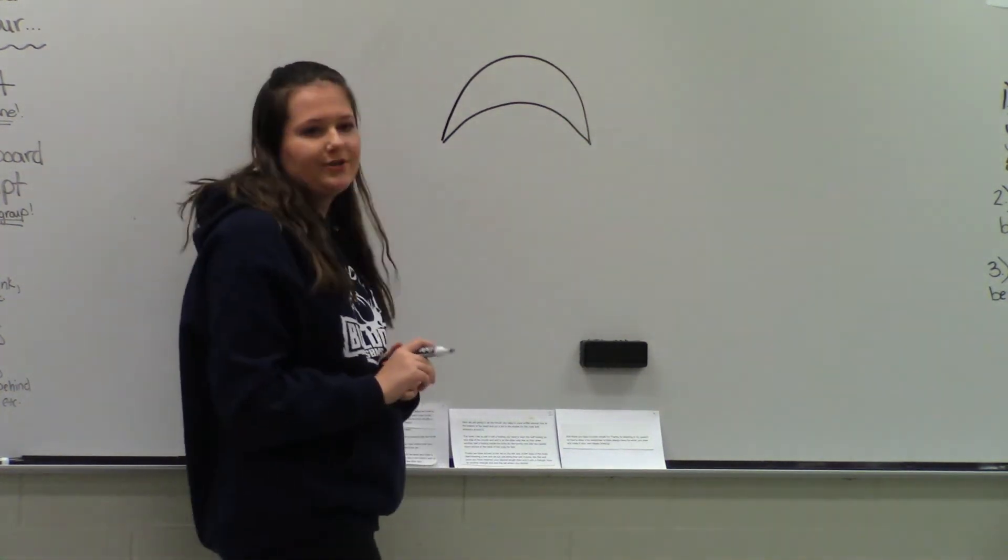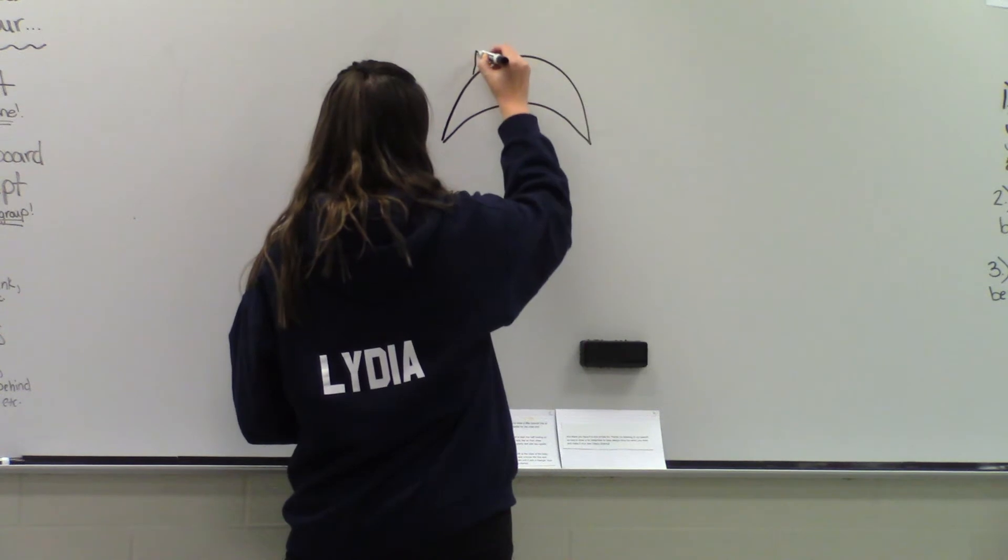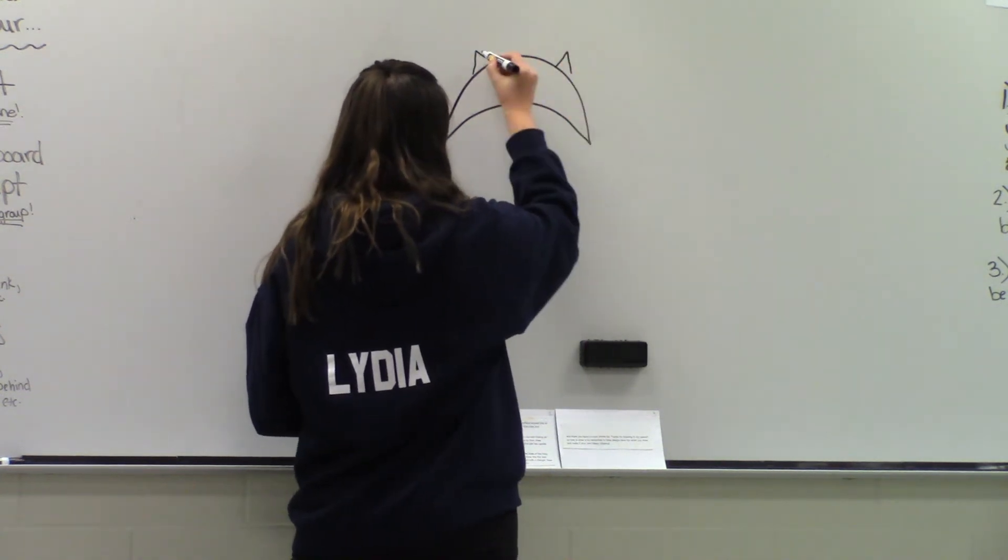For the ears, draw two triangles on top of the head and a line down the middle.